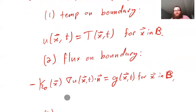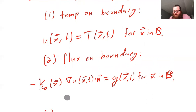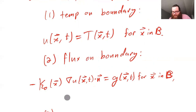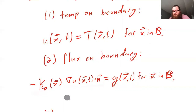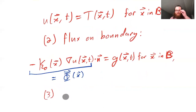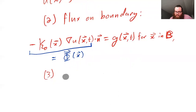We can prescribe the temperature on the boundary, and we can also prescribe something like the flux on the boundary — specifying how much heat is flowing in or out through time. This looks like: a property of the material times the temperature gradient, which by Fourier's law gives the flux. This normal vector is the normal at the boundary, so n also depends on x. We're saying the flux along the boundary is some prescribed function, where x comes from the boundary.